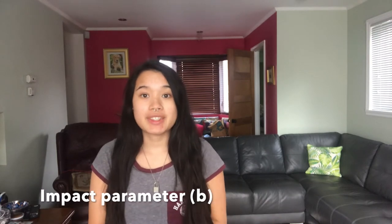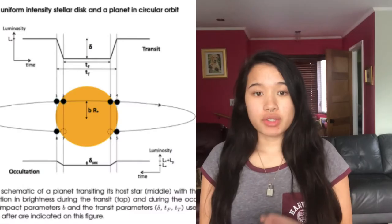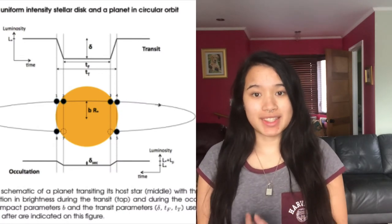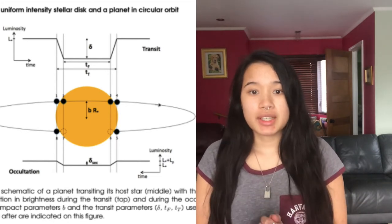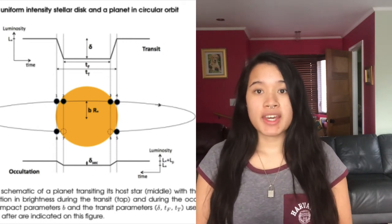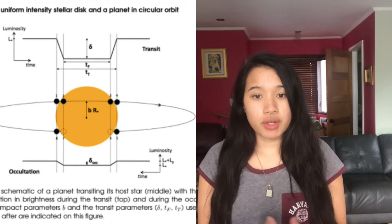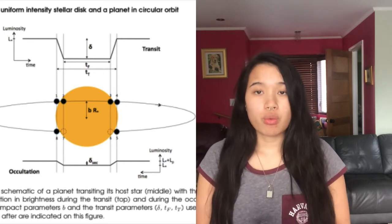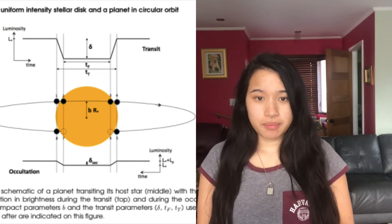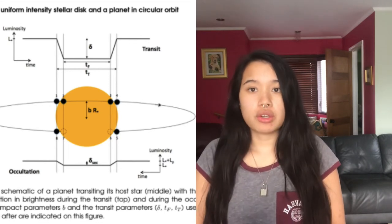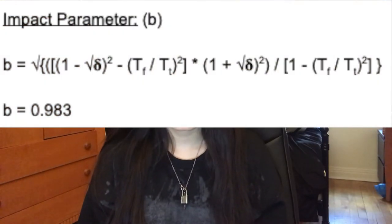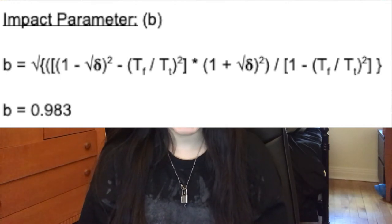The impact parameter, B, is the sky-projected distance between the center of the stellar disk and the center of the planetary disk at conjunction. It's important to know that the transit duration TT is dependent on parameter B. If B equals 0, the planet crosses the center of the stellar disk; if B equals 1, it's at the edge of the disk. So if the exoplanet crosses the center of the stellar disk (B = 0), the transit duration is shorter. Using gamma, TF, and TT, we calculate B equals 0.983.